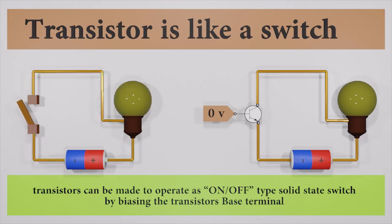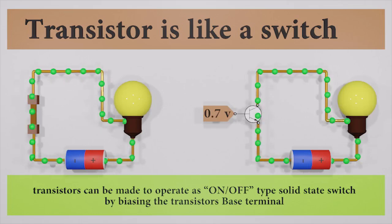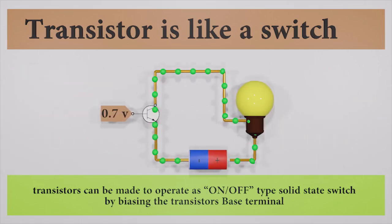If the base voltage is 0, then the transistor is like an open switch. To turn on the bulb, we should make it a closed switch. We can set the base voltage higher than 0.7 volt. Now the transistor acts like a closed switch.